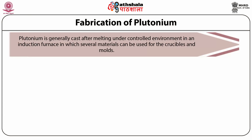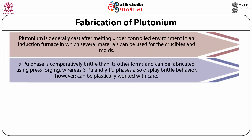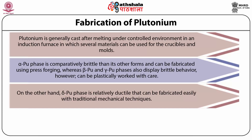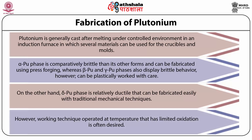Plutonium is generally cast after melting under a controlled environment in an induction furnace, in which several materials can be used for the crucibles and molds. Alpha-Pu phase is comparatively brittle and can be fabricated using press forging, whereas beta-Pu and gamma-Pu phases also display brittle behavior but can be plastically worked with care. Delta-Pu phase is relatively ductile and can be fabricated easily with traditional mechanical techniques, though working at temperatures with limited oxidation is often desired.